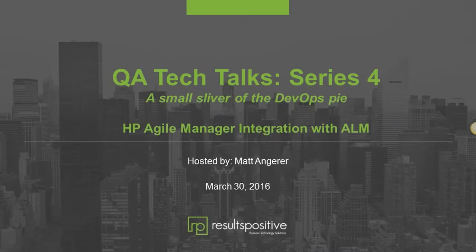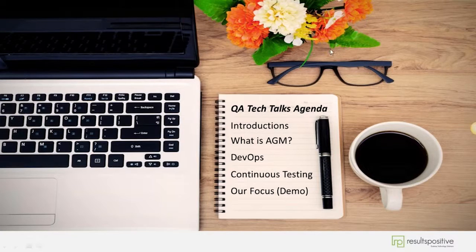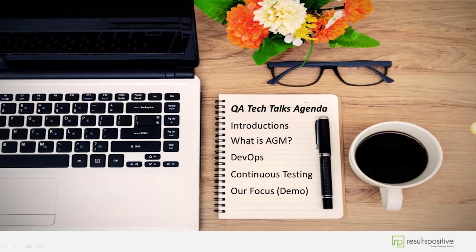Hi and welcome to our QA Technology Talks. This is Series 4, a small sliver of the DevOps pie. My name is Matt Anger and I'll be hosting this QA Tech Talk today. We'll be focused specifically on how HP Agile Manager integrates with ALM. Our agenda is a quick introduction, what Agile Manager is and what it is not, the DevOps technology matrix, continuous testing and integration, and then a demo showing how ALM integrates with Agile Manager.